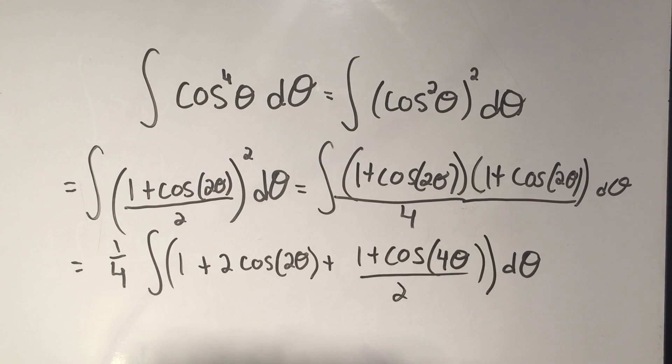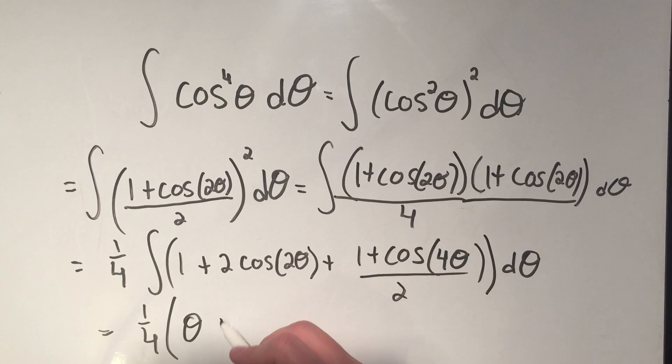And now I'm ready to actually do this antiderivative. The antiderivative of 1 is just theta plus 2. The antiderivative of cosine is sine of 2 theta. But I have to divide by that 2 on the inside.